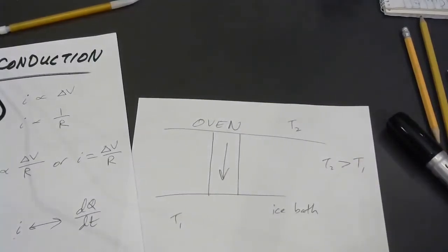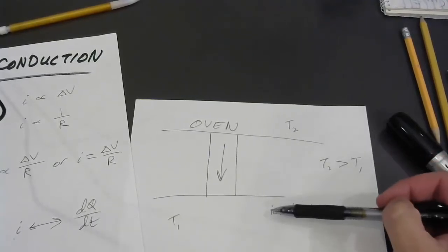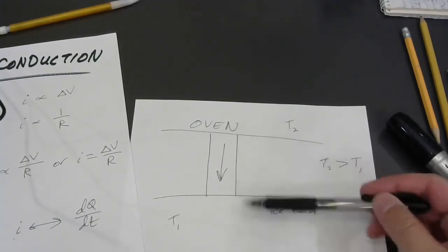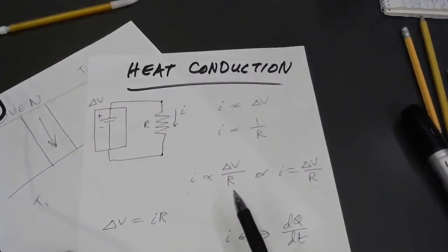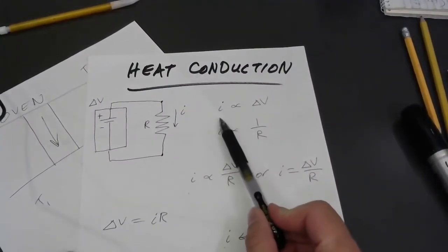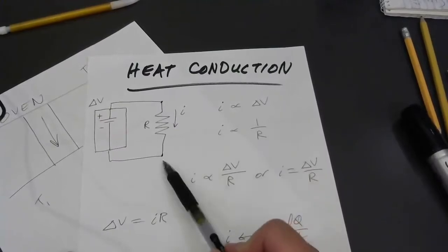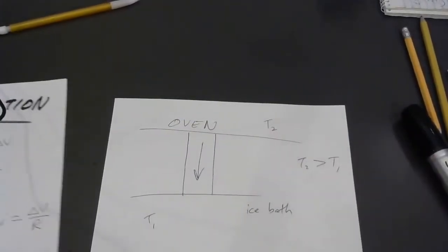Now, how quickly is it going to flow? Well, that depends on a number of things. The greater the temperature difference, the greater the rate at which energy might be transferred from here to here. That's analogous over here to the fact that more charge will flow per second if you put a larger potential difference across the resistor. Here, we're talking about a larger temperature difference.